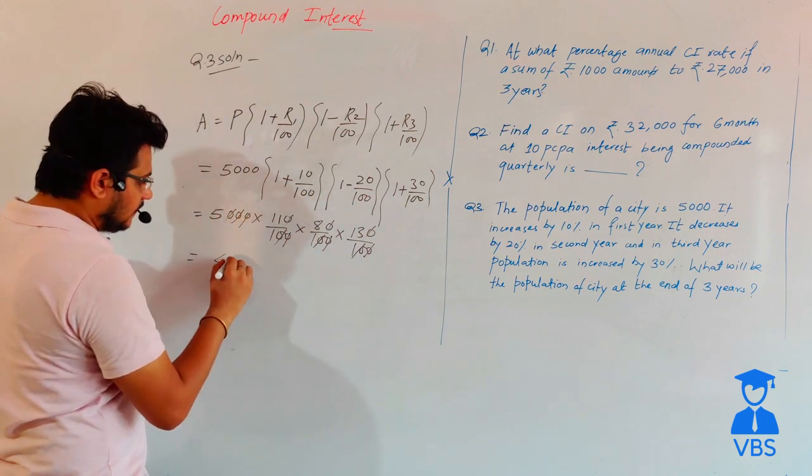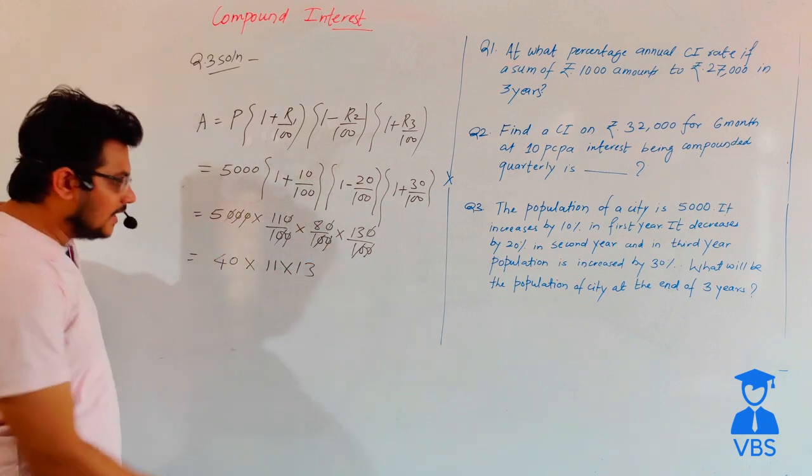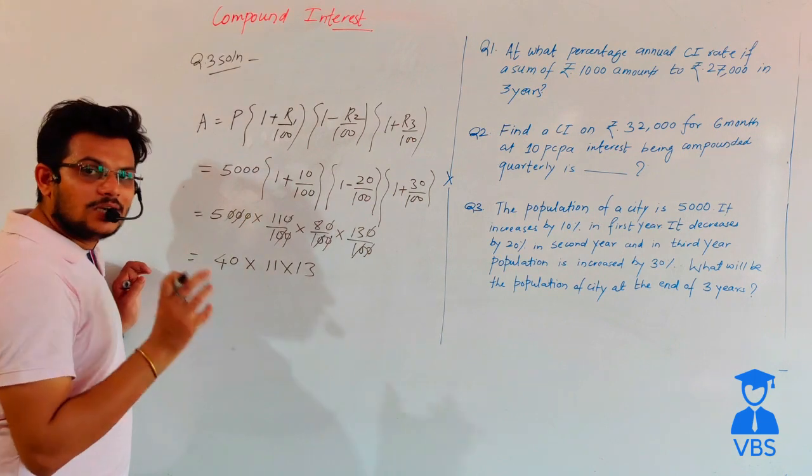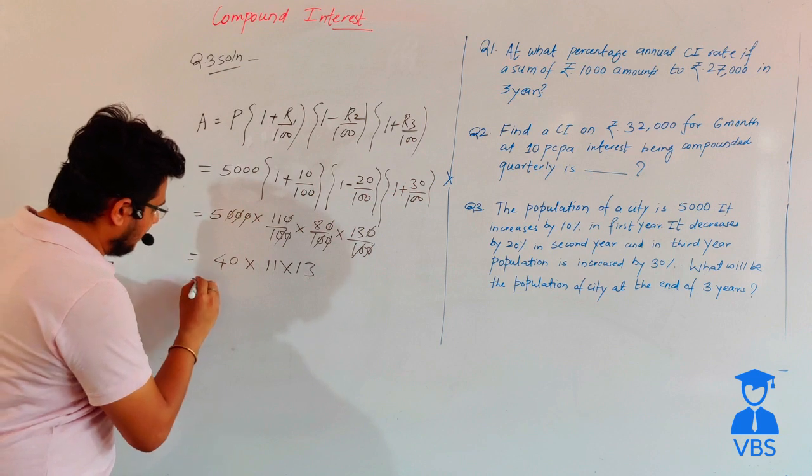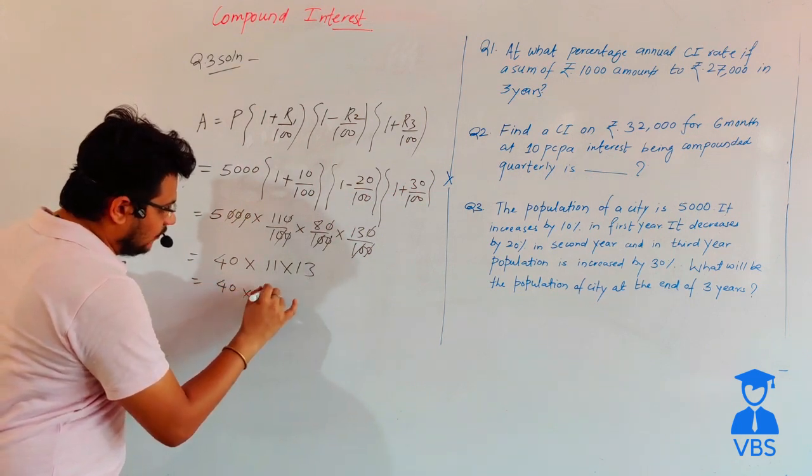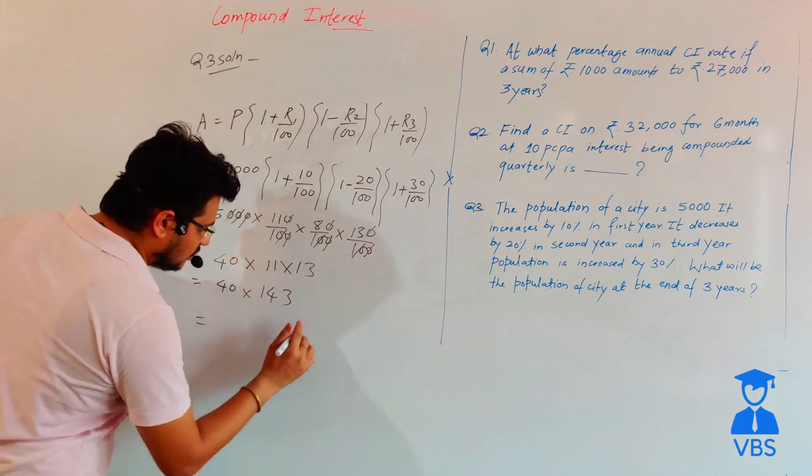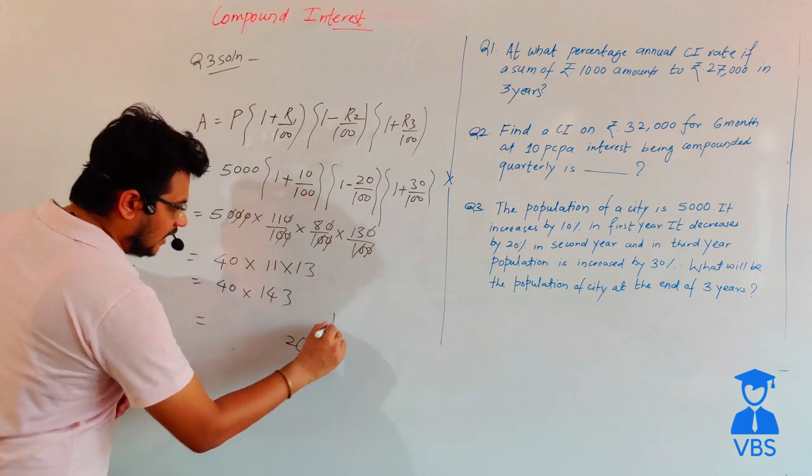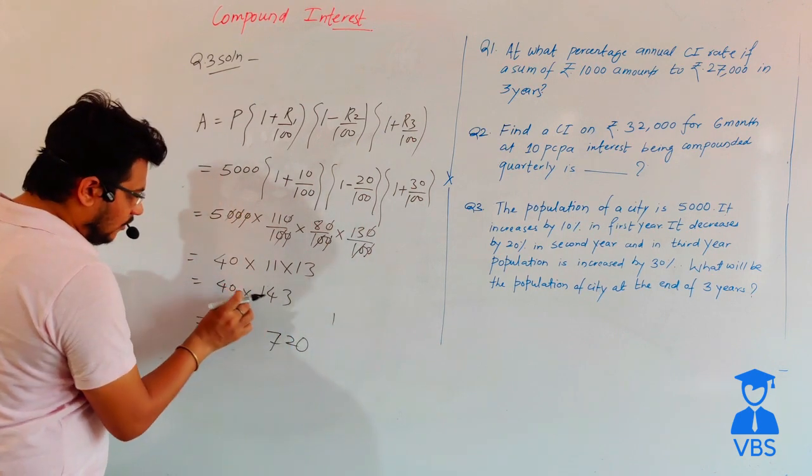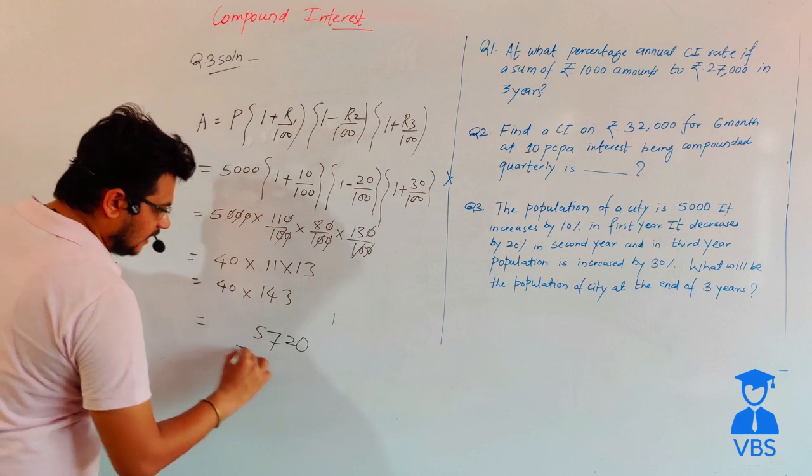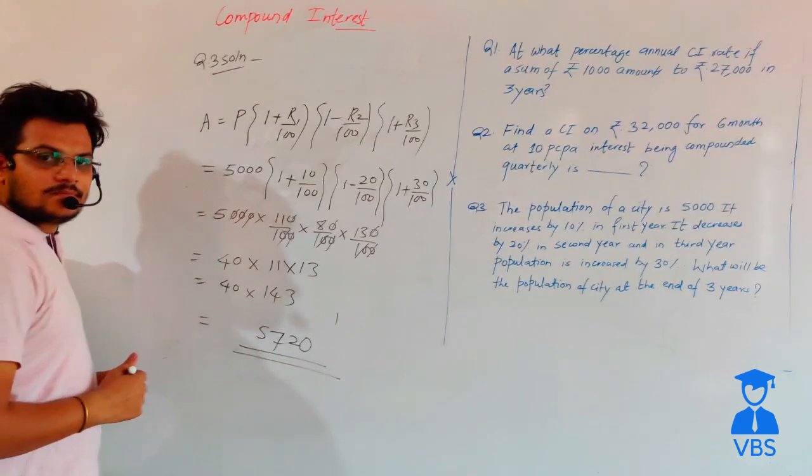40 times 11 times 13. Using the multiplication technique for 11, this becomes 40 times 143. Simple mathematics: 40 times 143 equals 5720. The answer is 5720.